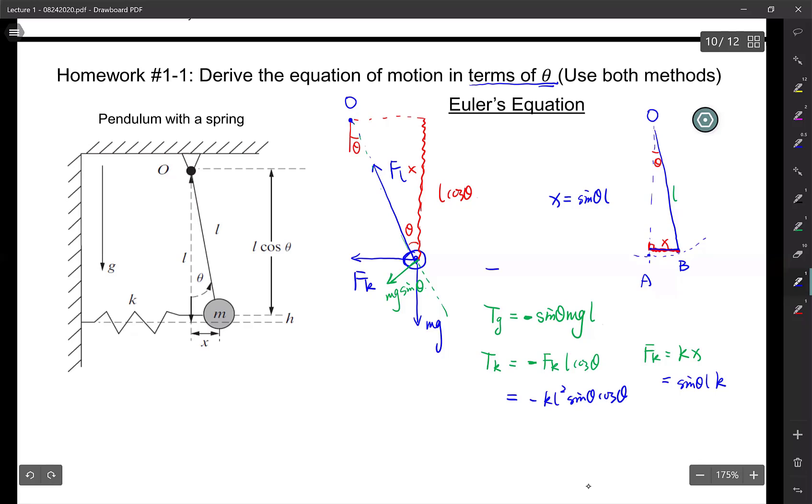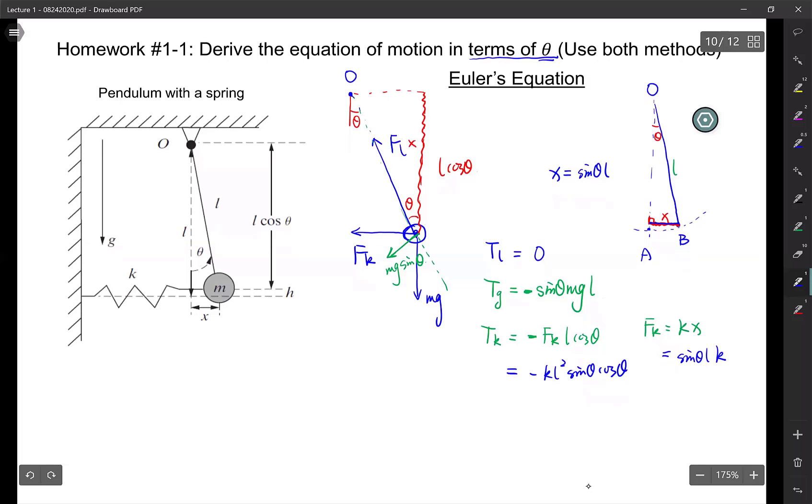If you want, you can also add Tl. That's the tension torque due to the tension force, because there's no arm length, there's zero. So the sum of all these torques, in this case, you have a mass rotating around a pin point O. So that means your J is the same thing, M L squared theta double dot, and then you just plug in all these torque values back in.